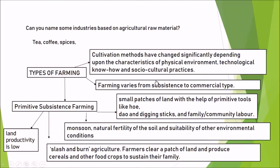As time passed and physical environments changed, technological knowledge reached the people, and advances brought certain changes in agriculture that impacted socio-cultural practices. Farming varies from subsistence to commercial type. Let us first find out what subsistence farming is.